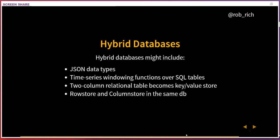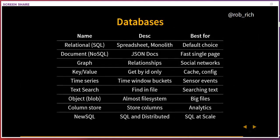Here's the money shot — a very short description of each database type and what it's best for: SQL, NoSQL as a document store, graph, key-value, time series, text search, object/blob/file system, column store, and new SQL distributed. I'm sure I've left some off — definitely tweet me or add questions in the chat to highlight database types I should add.